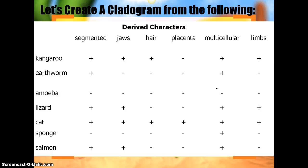We're going to create a cladogram from the following. Our organisms are: kangaroo, earthworm, amoeba, lizard, cat, sponge, and salmon. And our characteristics are: segmented, jaws, hair, placenta, multicellular, and limbs. What you're going to look at is how many characteristics each individual has or doesn't have. The individual that has the most characteristics is going to be at the top of our tree, and the one with the least is going to be at the bottom.